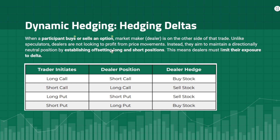In other words, dealers must limit their exposure to delta. So if a trader buys or sells a call or put, the dealer has the opposite position and will hedge that exposure by either buying or selling the underlying stock.